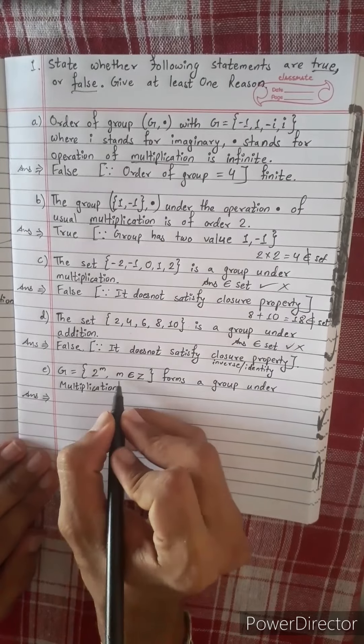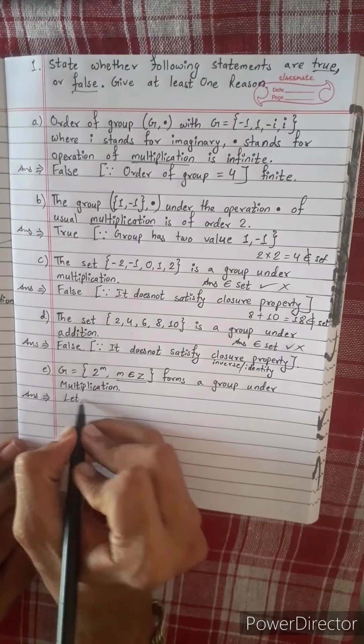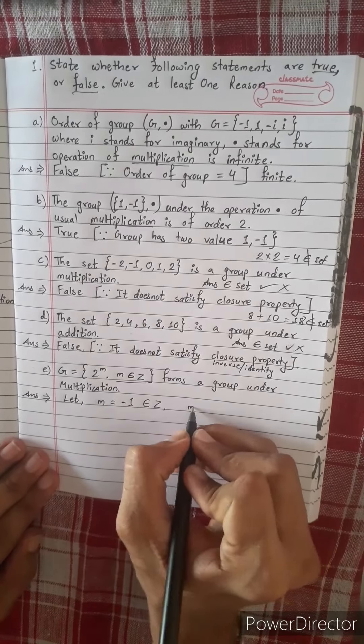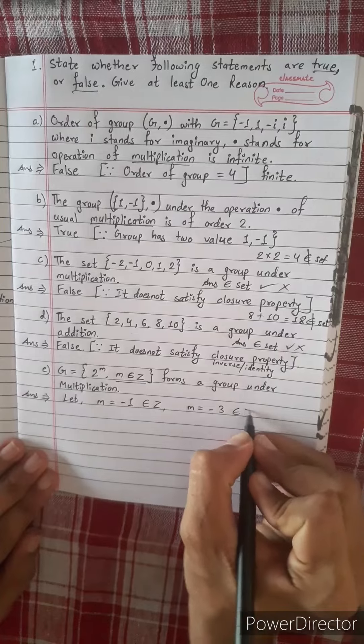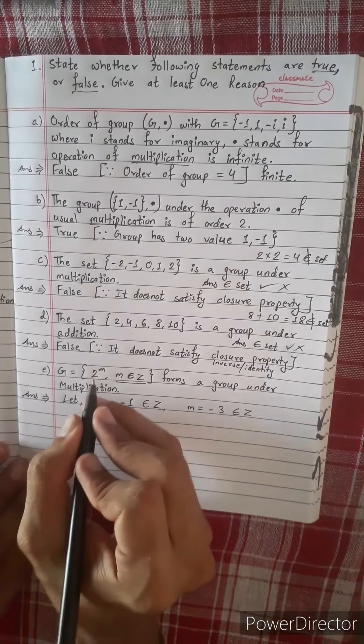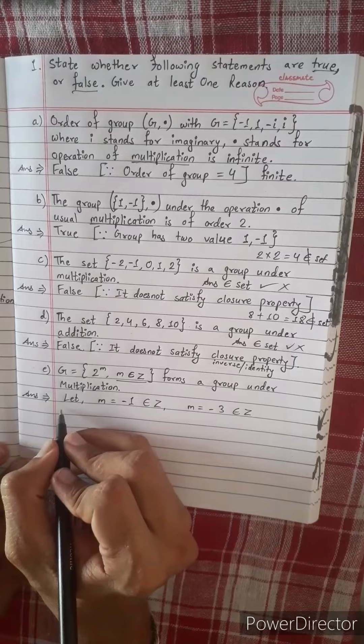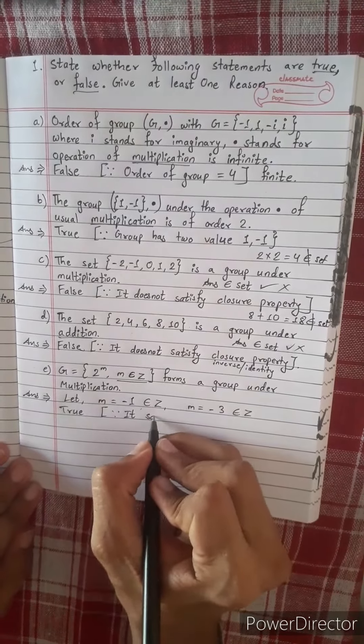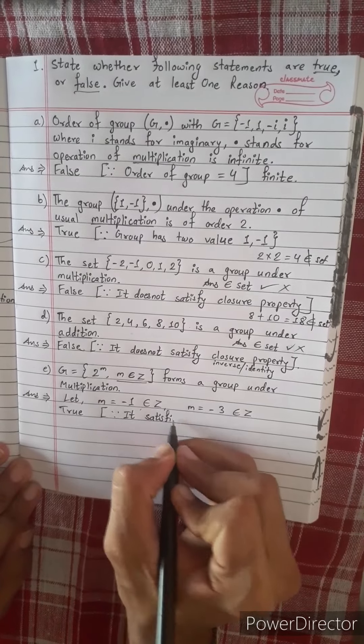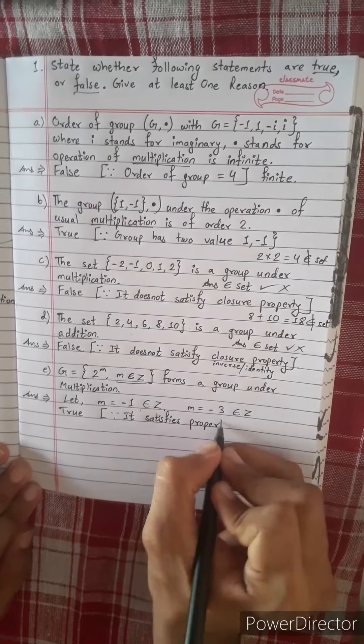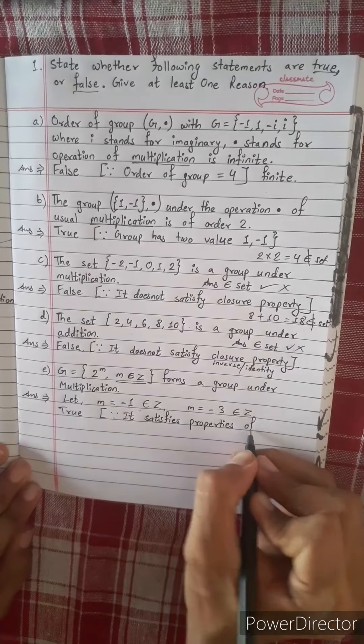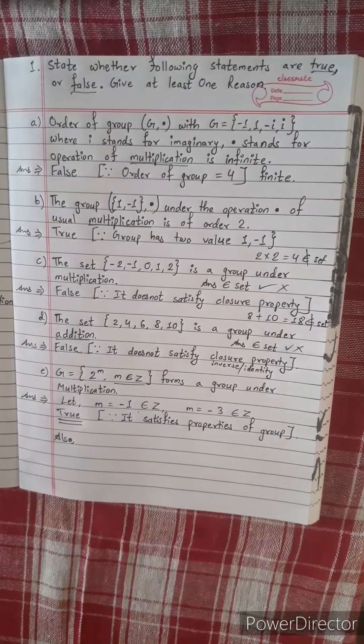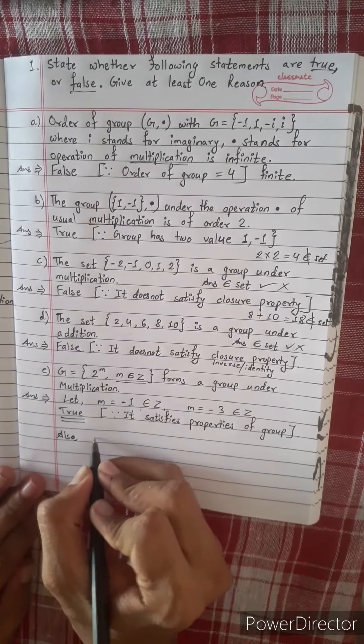The number M belongs to integer. Let M is equal to minus one. It belongs to integer. M is equal to minus three. M is equal to zero. So here it is true. It satisfies properties of group. So it is true, it is like this process.